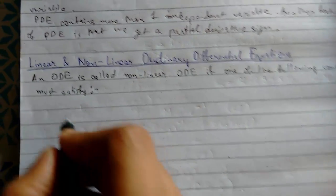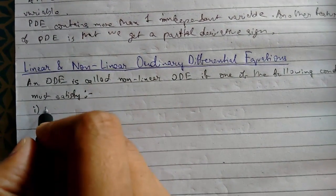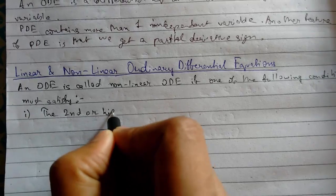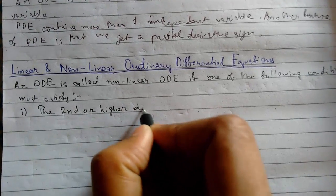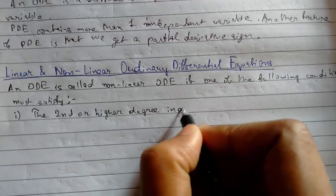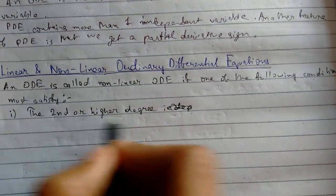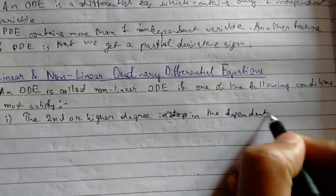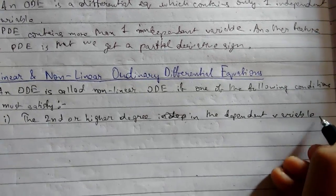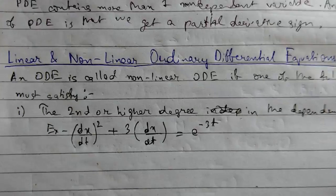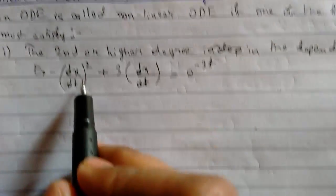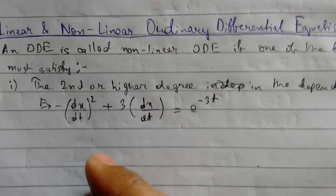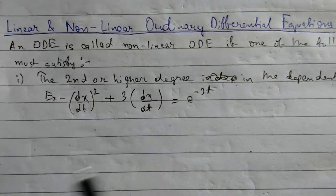Condition one: the dependent variable must be of second or higher degree. For example, dx/dt is the dependent variable and its degree is 2 or higher. If we can see a second or higher degree in the dependent variable, it is a nonlinear ODE.